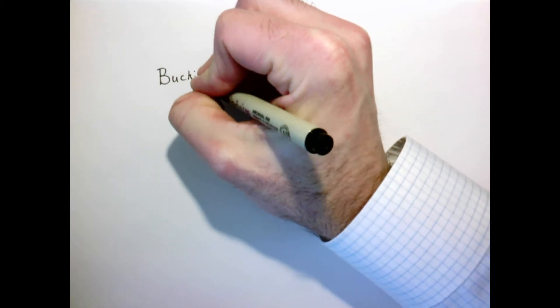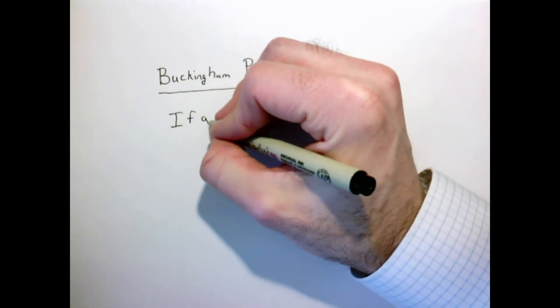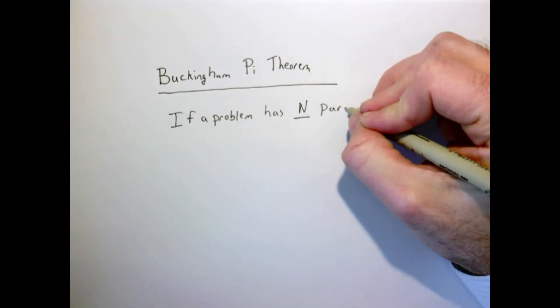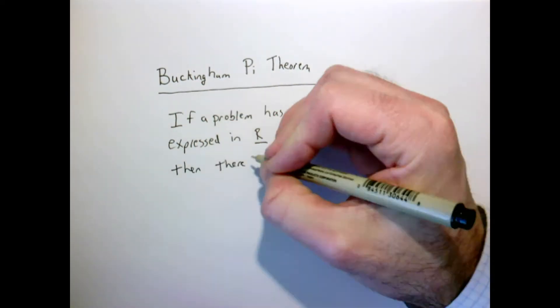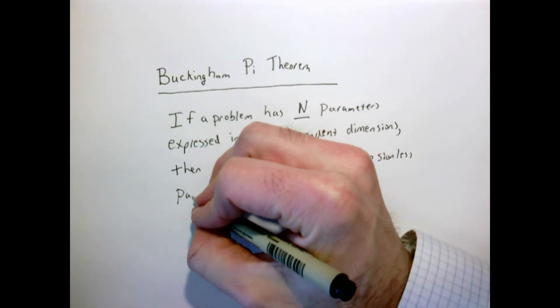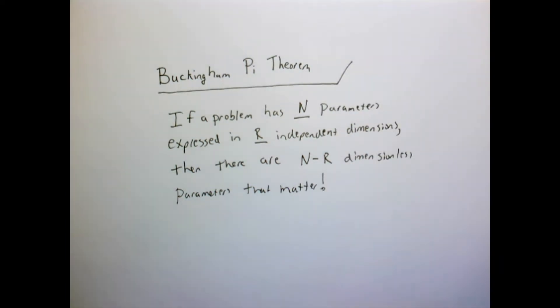So the key result that we're going to use in dimensional analysis is something known as the Buckingham Pi theorem. The Buckingham Pi theorem states that if a problem has n parameters expressed in r independent dimensions, then there's n minus r dimensional parameters that really matter for the problem. It's difficult to understand what this statement means, so I'm going to have to show you several examples, and by the end you'll sort of get it.